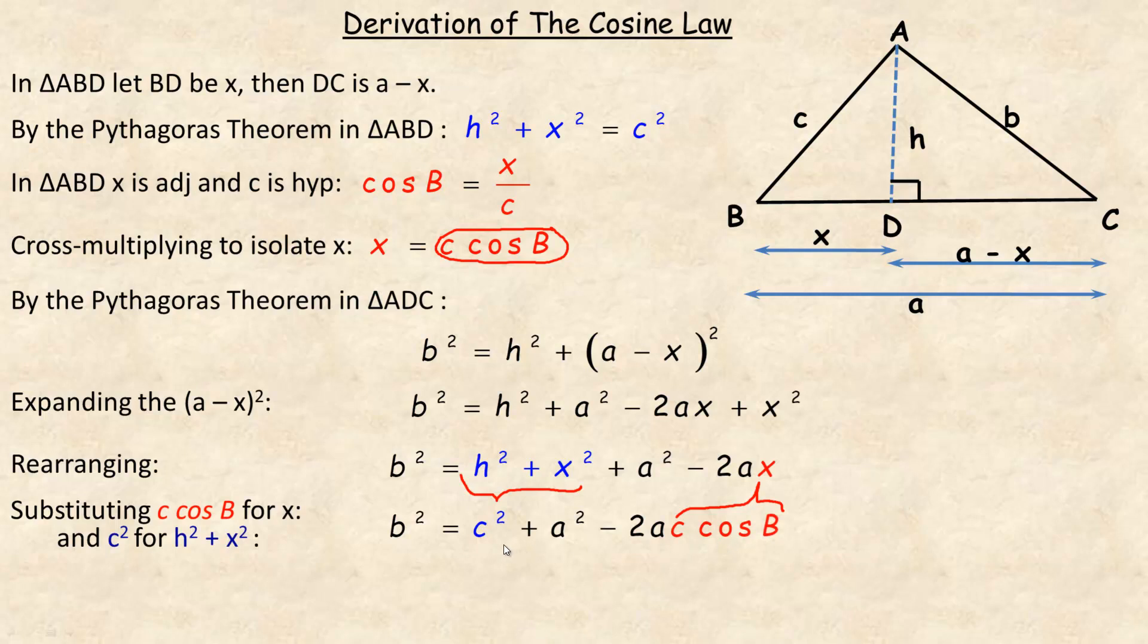So this is the cosine law to find side B in any triangle. B squared equals C squared plus A squared minus 2AC cos B. Notice that this is the angle across from this side over here. And what's over here, C squared plus A squared are the other two sides. And then these two sides are the same two ones that are squared here. The pattern is always the same.